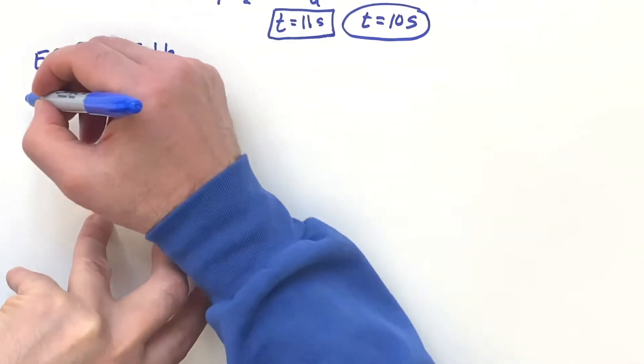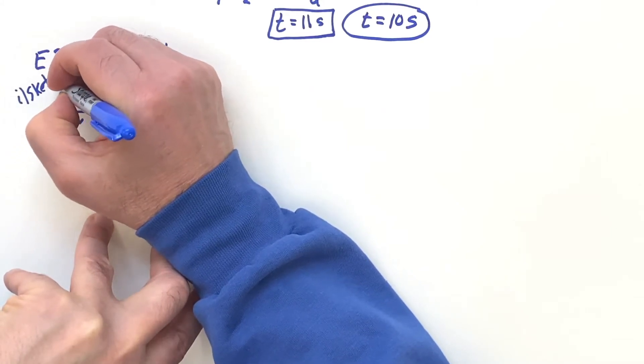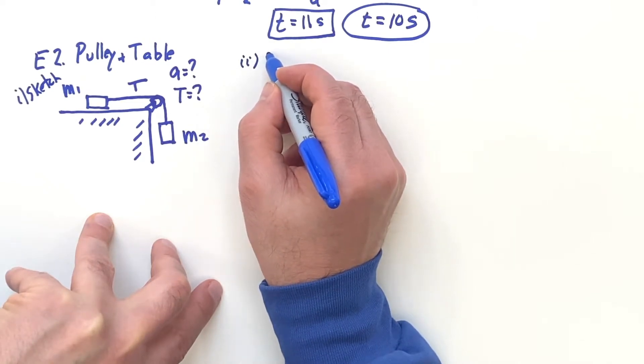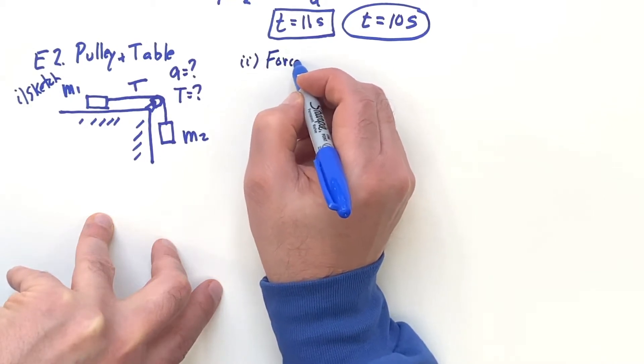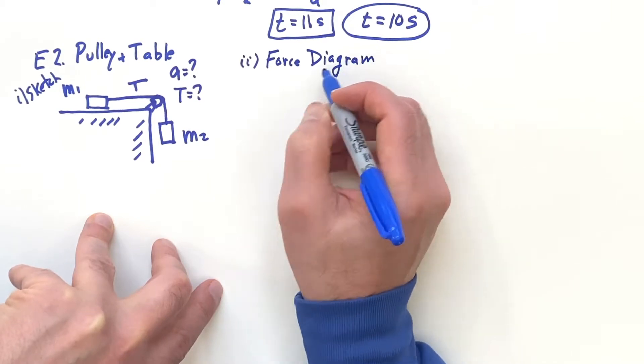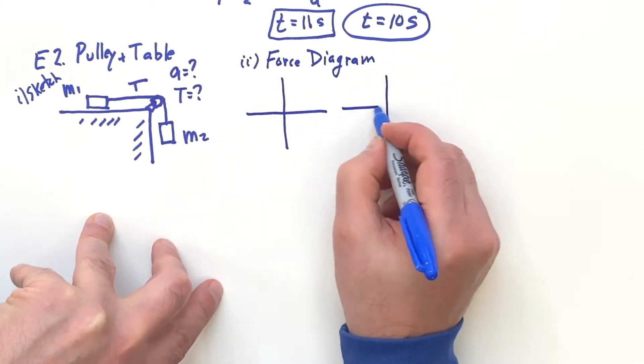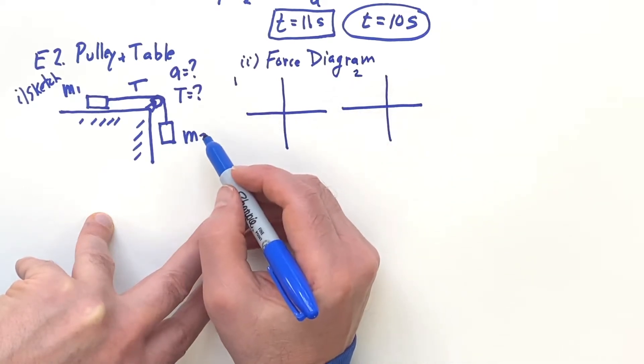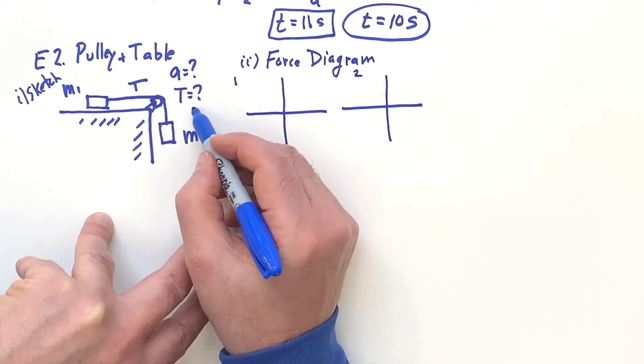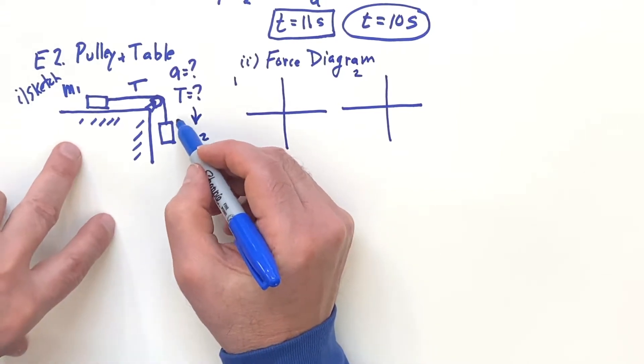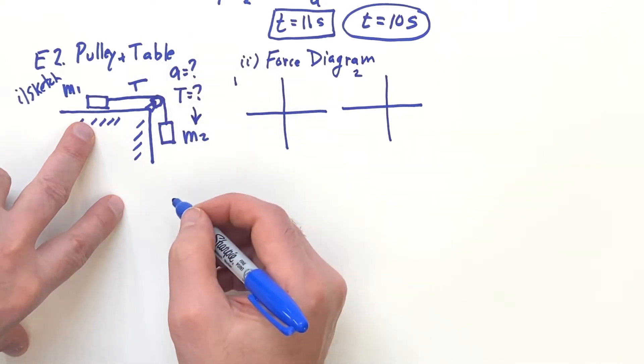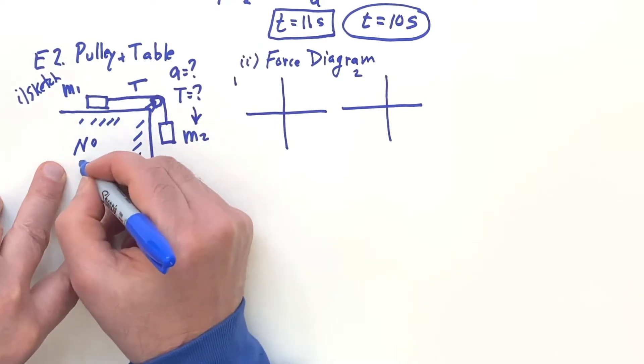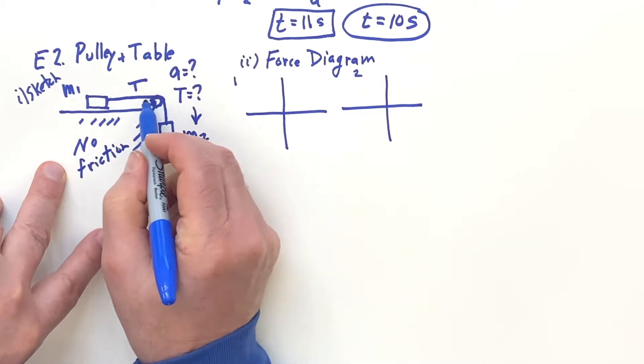So this is the sketch and then we come over here to do the free body diagram or simply the force diagram. Notice I have two masses so I need to have two diagrams. One for mass one, one for mass two. I also need to pick a direction. I'm going to pick the direction to be down since this is going to pull with gravity coming down and I need to emphasize there's no friction. So in other words, you can imagine that like on ice or something, no friction anywhere.